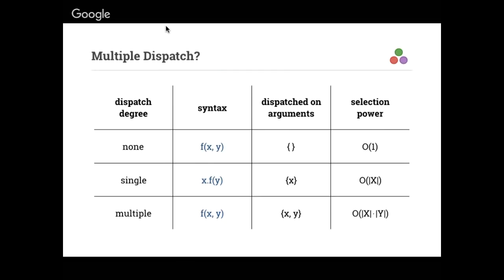Multiple dispatch is basically just taking that idea and saying: what's so special about X? What if I wanted to call a special version based on the other argument too? Or maybe if there are three arguments, I want to call a special version based on some combination of those three arguments. So now we're dispatching on all of the arguments, and the selection power becomes this product — potentially selecting different code based on how many concrete types X and Y could possibly take on.